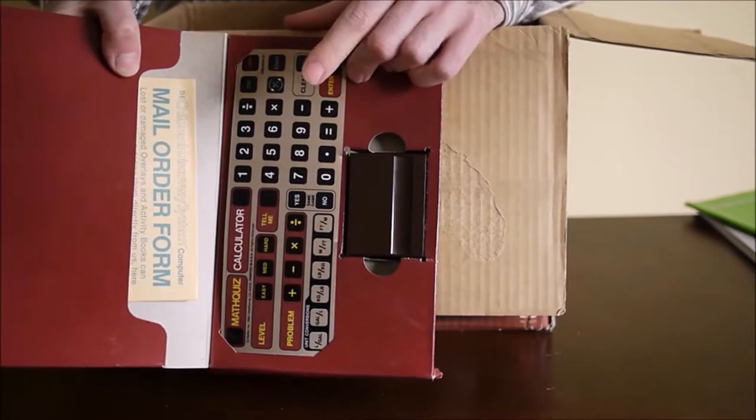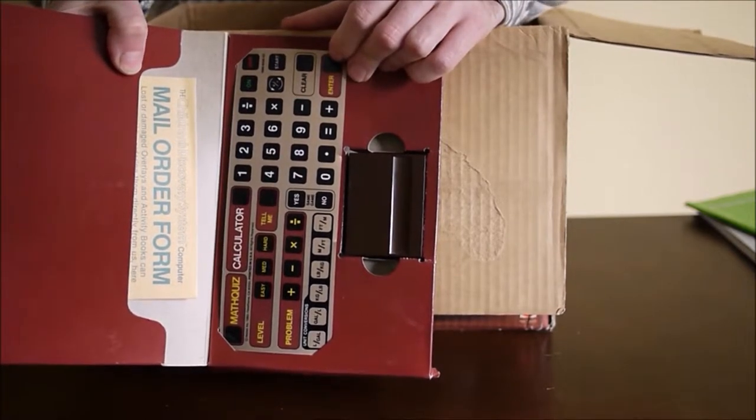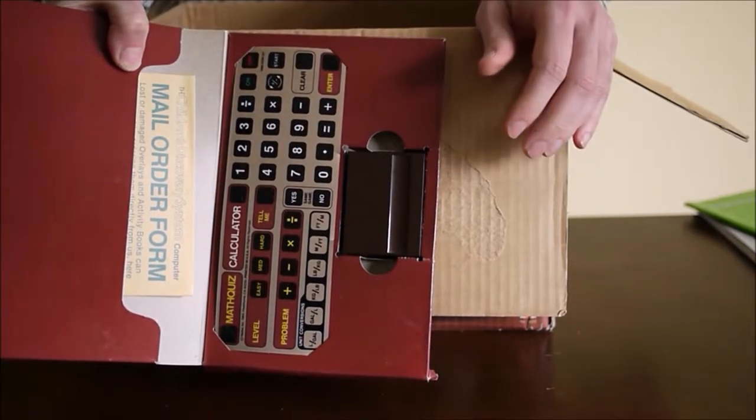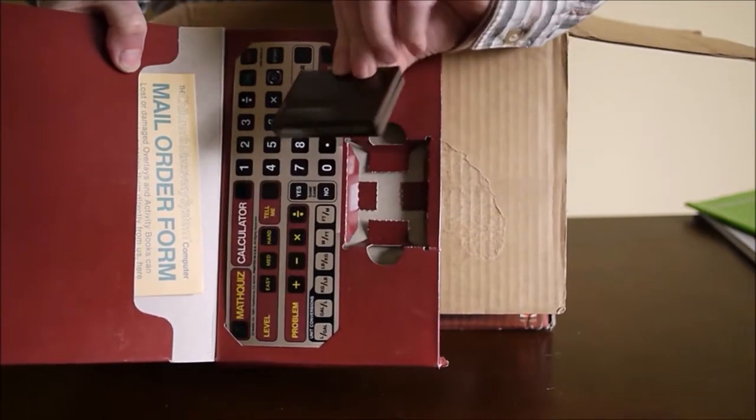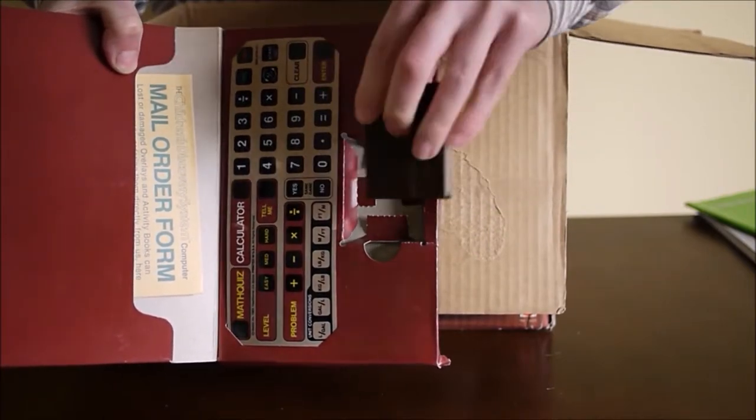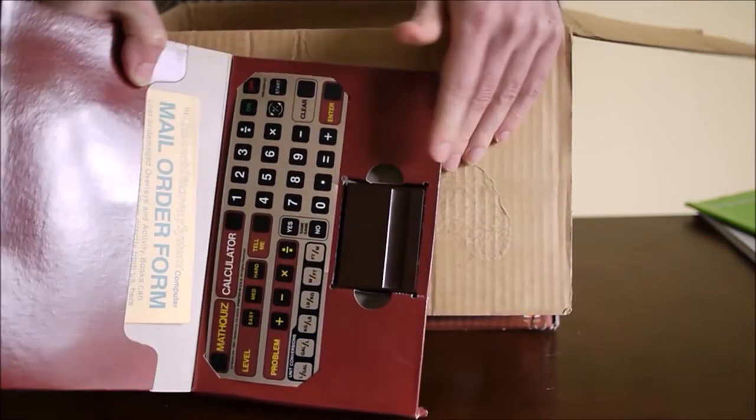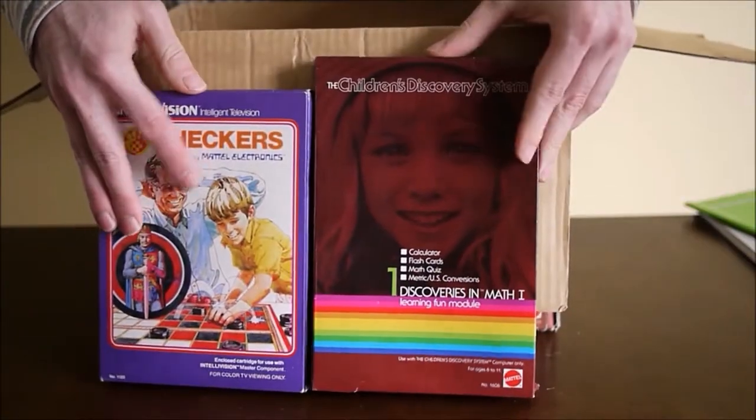The mail order form lets you reorder activity books or overlays if you lose them. They charged $2.25 for an overlay and $2.50 for an activity book. The modules that were sold separately cost about $21 each. This here is the cartridge, it is two and a half inches in length.